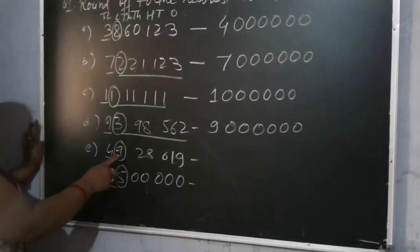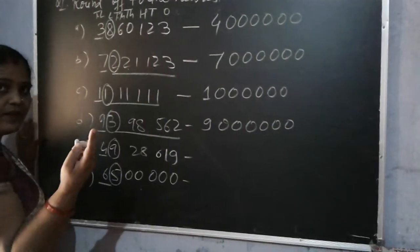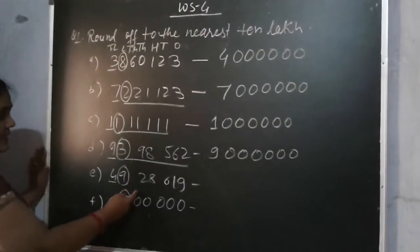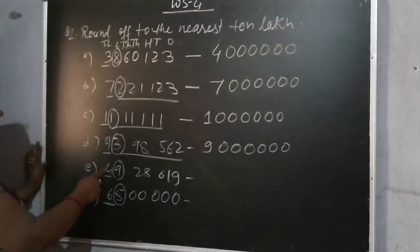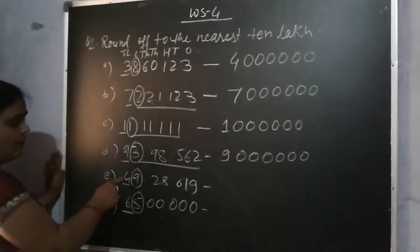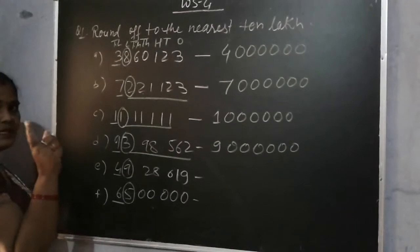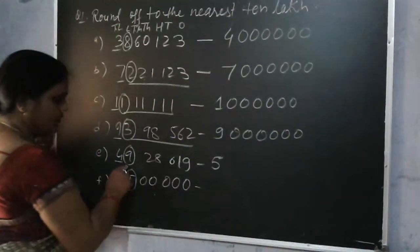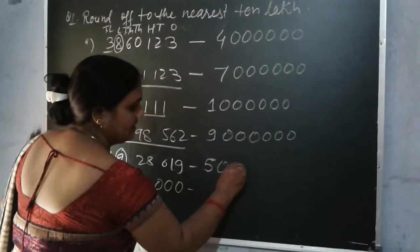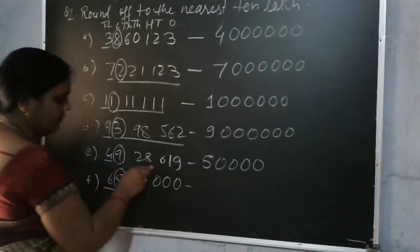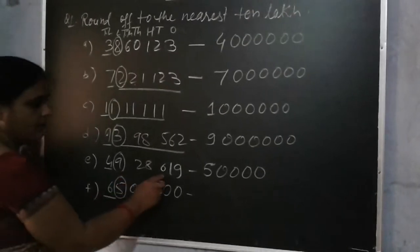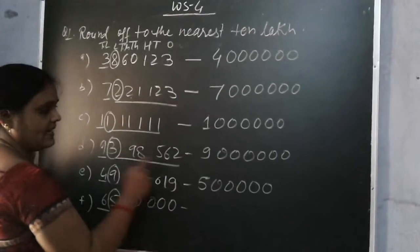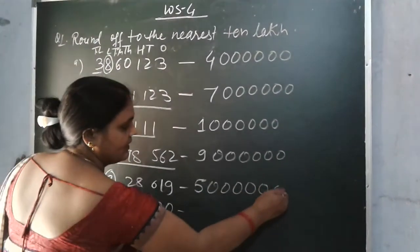Here in this question, the digit 9 is on the lakh place and 9 is more than 5 — 9 is greater than 5. So we will add 1 to the 10 lakh place: 4 plus 1 equals 5. Write down 5, and put 6 zeros on that place. Since we are rounding up, all digits before that place get 0.